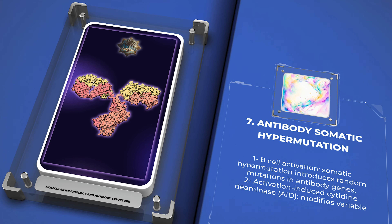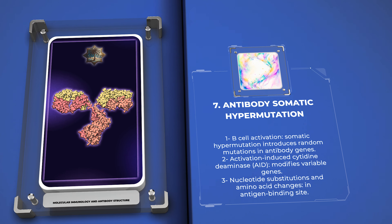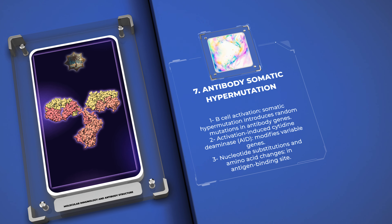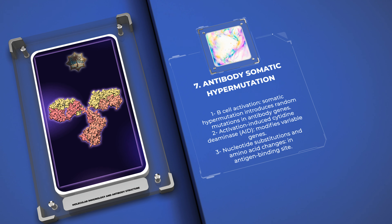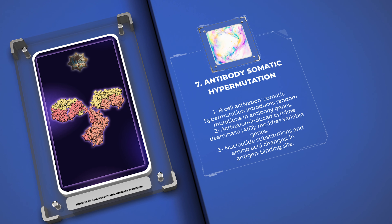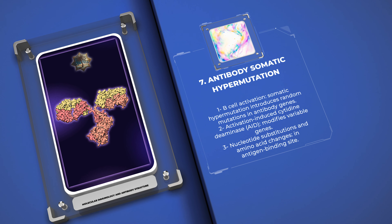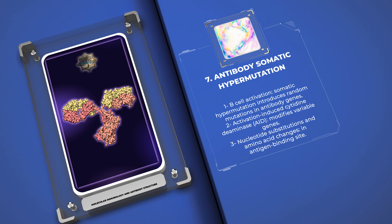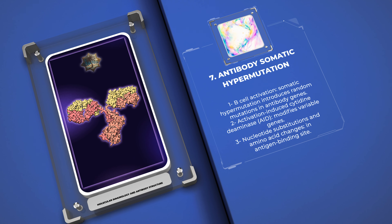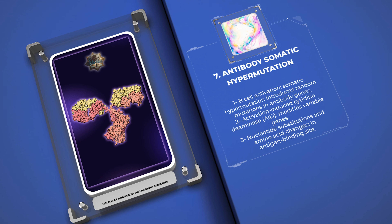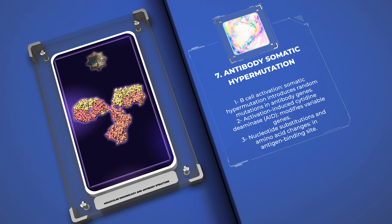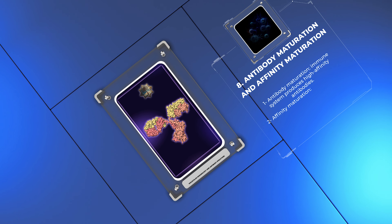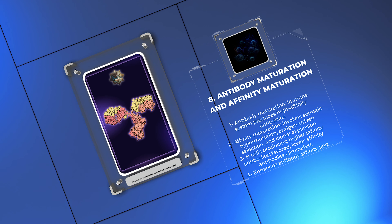During B cell activation, somatic hypermutation introduces random mutations in antibody genes, leading to the production of higher affinity antibodies. This process involves activation-induced cytidine deaminase (AID), which modifies variable genes, resulting in nucleotide substitutions and amino acid changes in the antigen binding site. B cells producing antibodies with greater affinity for the antigen are selected for expansion.